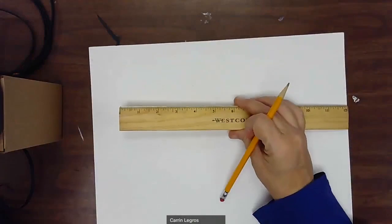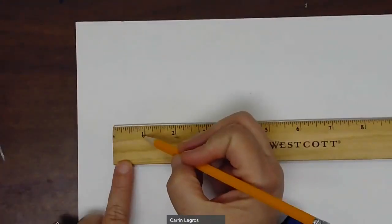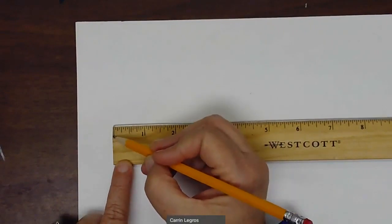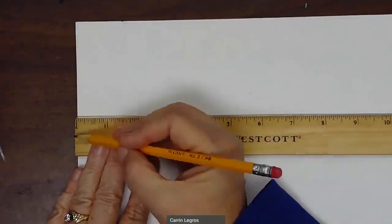I'm going to start with my ruler and find the zero. So here's the one. It's the long line next to the one. I want to find the zero and match up the zero to the edge of the paper.